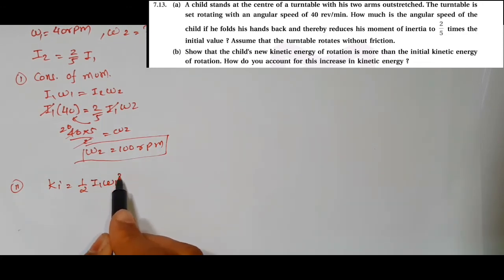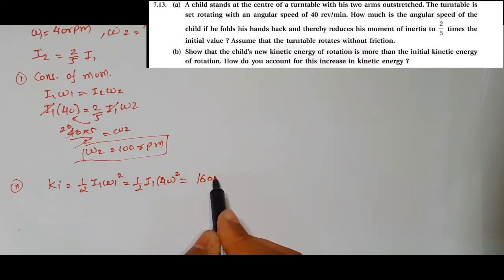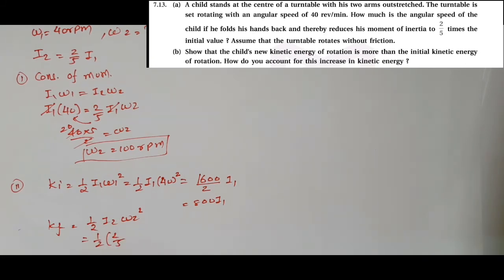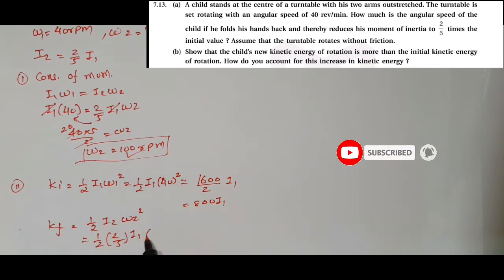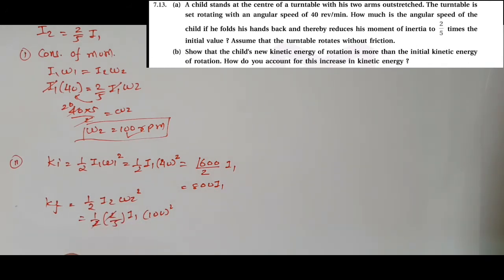Now for the initial kinetic energy: Ki equals 1/2*I1*omega-1 squared, which is 1/2*I1*40 squared equals 1/2*I1*1600, so we get 800*I1. For the final kinetic energy: Kf equals 1/2*I2*omega-2 squared, which is 1/2*(2/5)*I1*100 squared. This equals 1/2*(2/5)*I1*10000, which simplifies to 2000*I1.